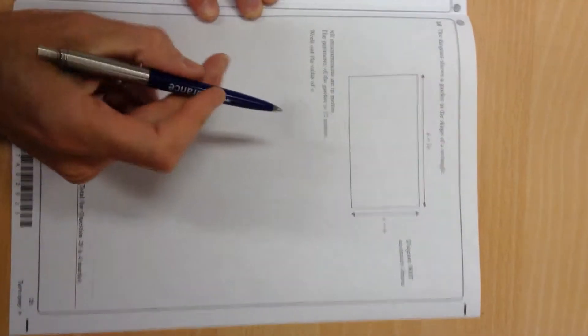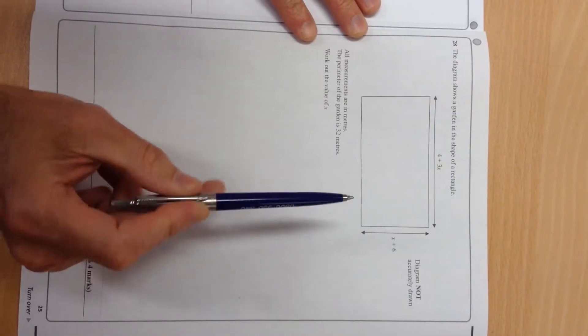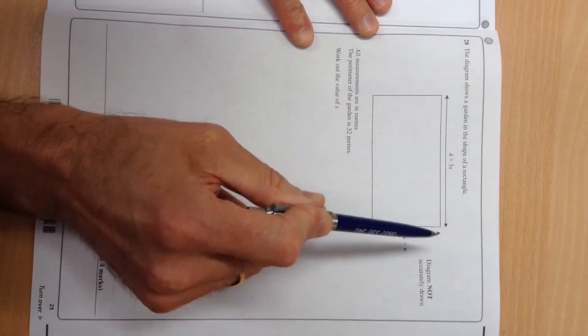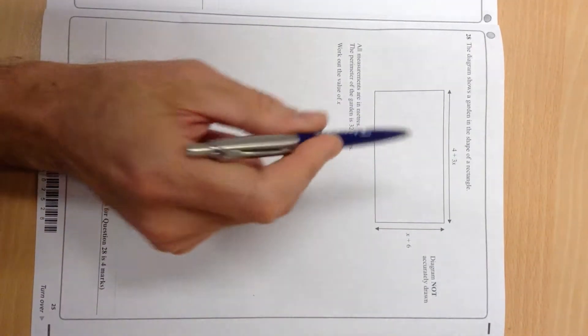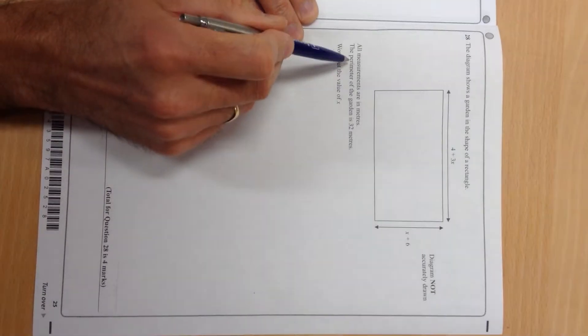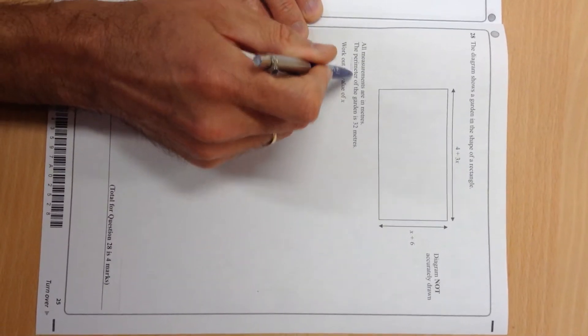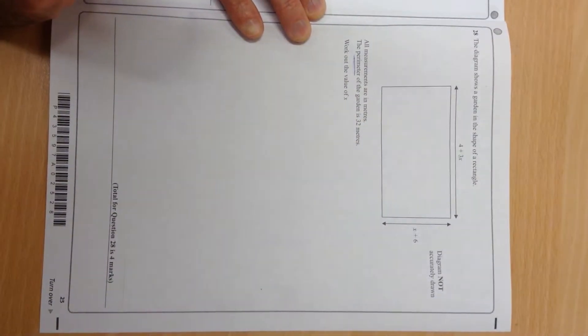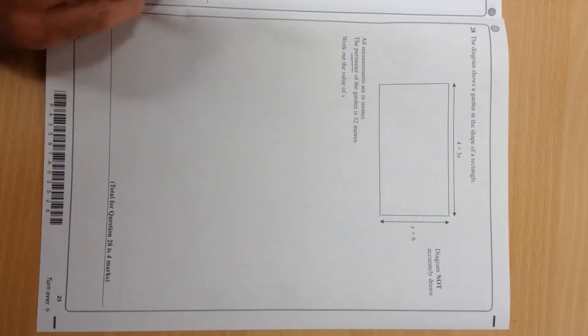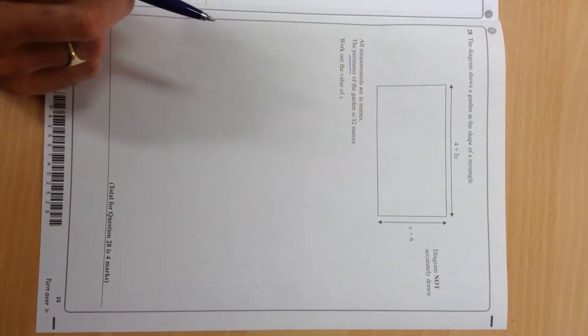Right, on this question linking perimeter with algebra, obviously you've got to know what perimeter is. You should know the perimeter is all the way around the outside. The first thing students get wrong on this is that they will put these two sides together, so they'll get 4x plus 10.